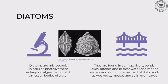Diatoms are microscopic unicellular, photosynthetic, eukaryotic algae that inhabit almost all bodies of water. Unicellular means they are made up of a single type of cell. Photosynthetic means they can produce their own food. Eukaryotic means they have a well membrane-bound nucleus.